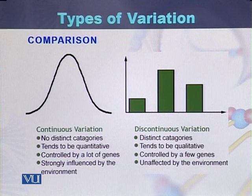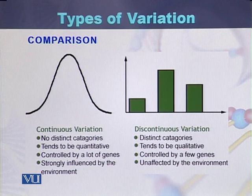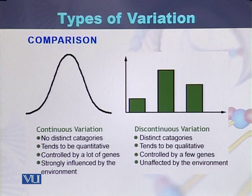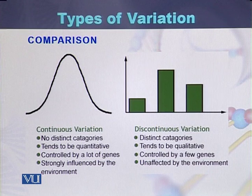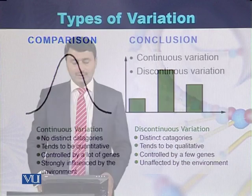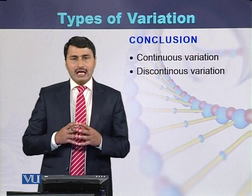Comparing the two types: continuous variation has no distinct categories while discontinuous variation has distinct categories. Continuous variation can be qualitative in nature. Continuous variation is controlled by many genes while discontinuous variation is controlled by fewer genes. Continuous variation is strongly influenced by the environment while discontinuous variation is not affected by the environment.